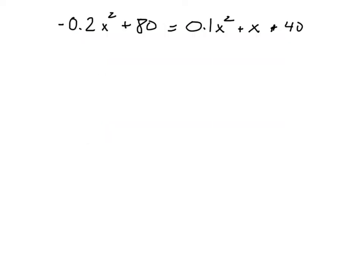So here's my setup. I've set the two equations equal to each other, and now I have to go about the business of solving this thing. If I do a little rearranging of the terms, I can add 0.2x squared to both sides, and I can subtract 80.